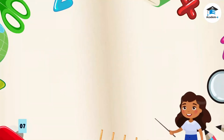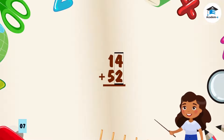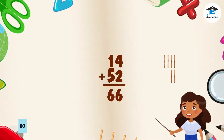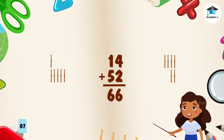Another example: let's add 14 and 52. Again, we always start on the right side, in the ones column. Four plus two is equal to six. We have four sticks and two sticks — one, two, three, four, five, six. Next, in the tens column: one plus five is equal to six. Counting the sticks: one, two, three, four, five, six. The sum is 66.